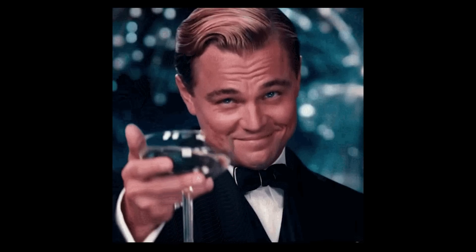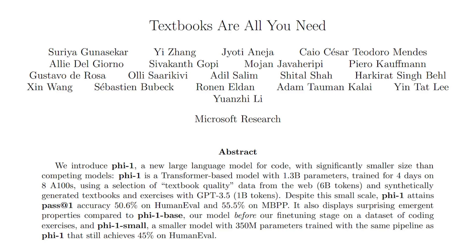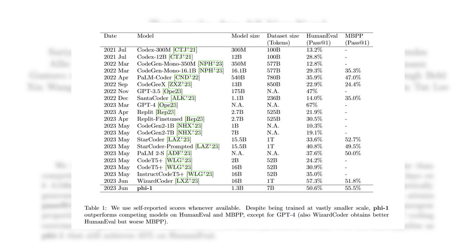Next up, we have our weekly dose of LLM news, and this field is absolutely going crazy right now. First up: Textbooks Are All You Need. This research paper trained a large language model using only textbook-quality data from the web — around 6 billion tokens — that can be used to generate textbooks and exercises. By using only high-quality data, it achieved more than 50% on the HumanEval benchmark. For context, most other models achieving 50% or more are at least 10 times larger than PHY-1, which is the model proposed in this paper.